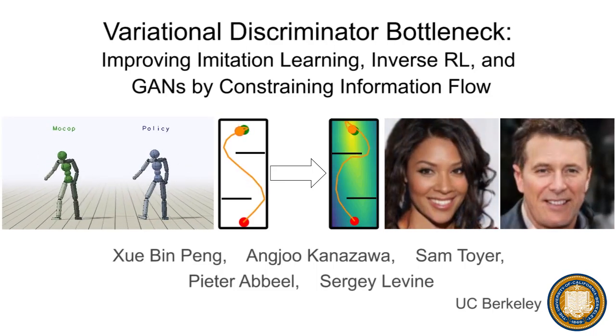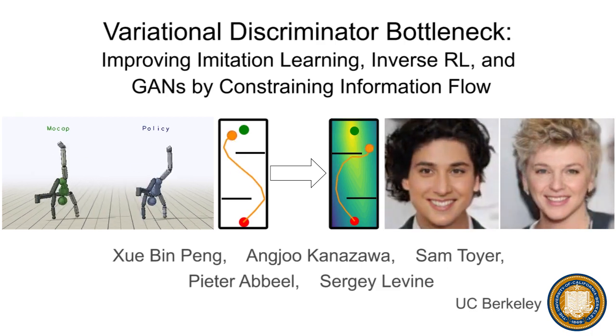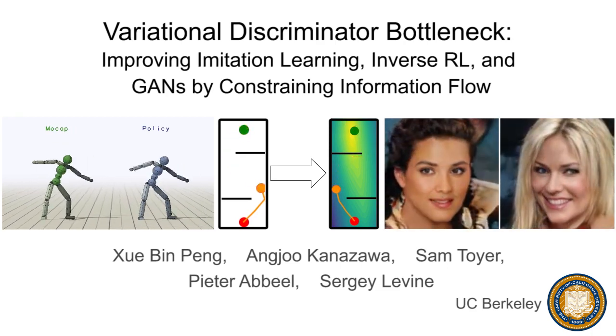We introduce the variational discriminator bottleneck for improving imitation learning, inverse RL, and GANs by constraining information flow.